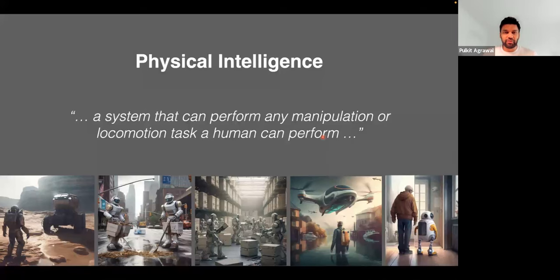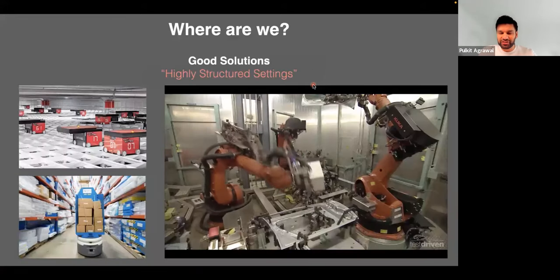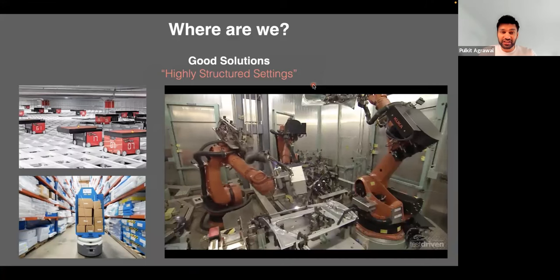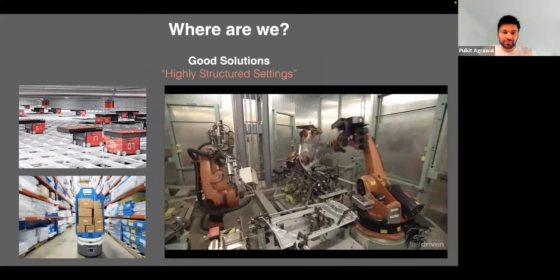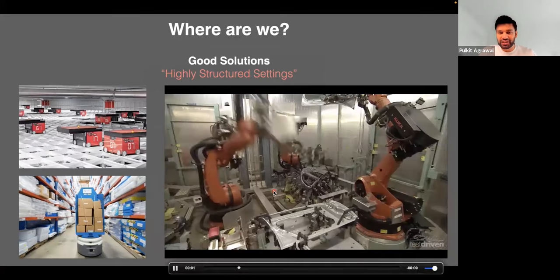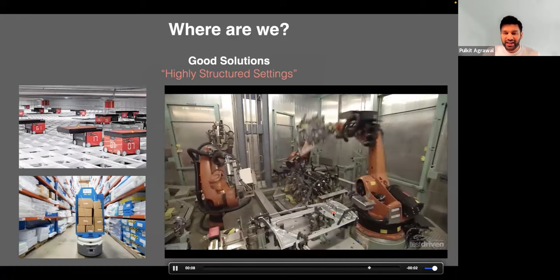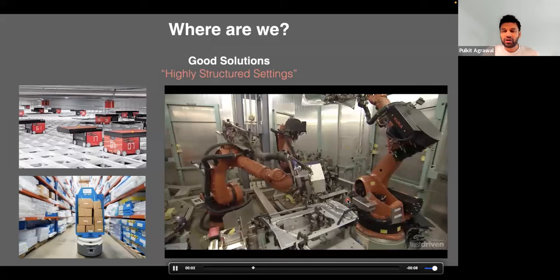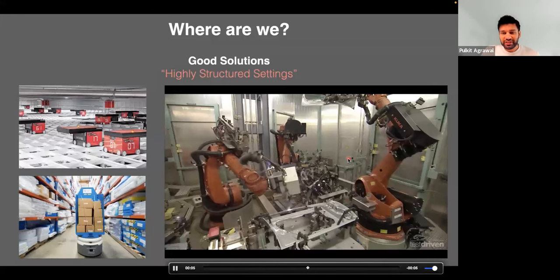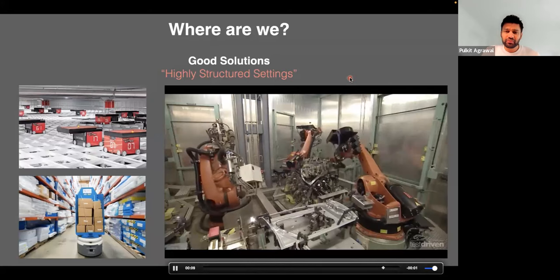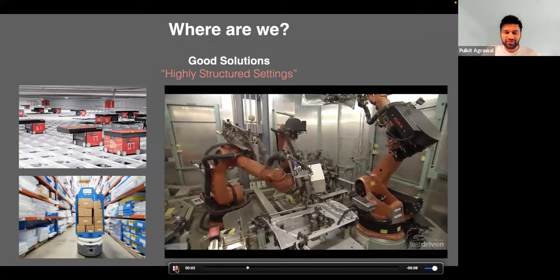The goal that my lab and many people in robotics have been pursuing is what can be best described as physical intelligence — a system that can perform any manipulation or locomotion task a human can perform. Today we have systems which work very well in highly structured settings, for example robots moving around in warehouses or robots in a factory repeating the same welding motion over and over with no need for adaptation.